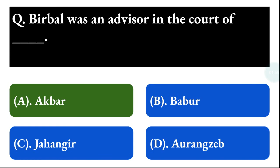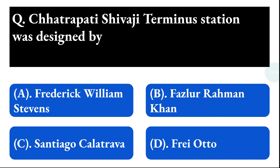Next question: Chhatrapati Shivaji Terminus station was designed by — option A: Friedrich William Stevens, option B: Faisalur Rahman Khan, option C: San Diego Caldeira, option D: Frei Otto. The correct answer is option A, that is Friedrich William Stevens.